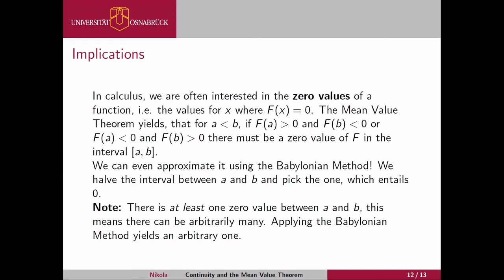Just because we know there is a zero between a and b doesn't mean there is exactly one — there could be arbitrarily many. We only know there is at least one, and that the number is odd. If f(a) is positive and f(b) is negative, we cross the zero line, then have to cross back to get negative again — so we know we have an odd number of zeros but at least one. When we apply the Babylonian method, we get an arbitrary one of these zero values and can't really control which one.